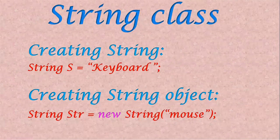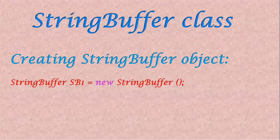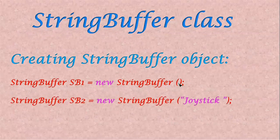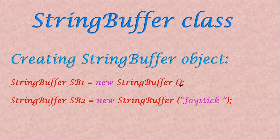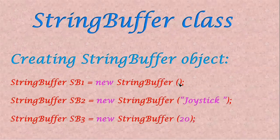Next, the StringBuffer class. Creating a StringBuffer object: StringBuffer sb1 is equal to new StringBuffer() — here sb1 StringBuffer object is created with nothing stored in it. Next, StringBuffer sb2 is equal to new StringBuffer of joystick given in double quotation, where joystick is stored in sb2. The third way: sb3 is equal to new StringBuffer(20) — here 20 is an integer number; it creates an object that can store 20 characters.